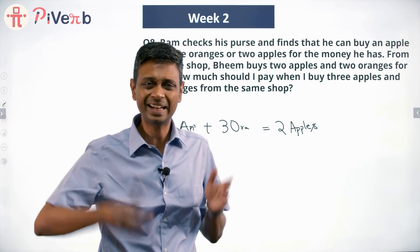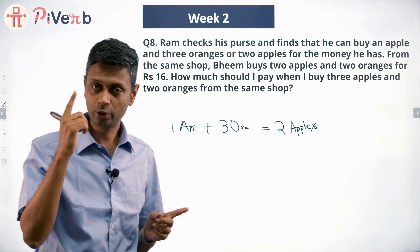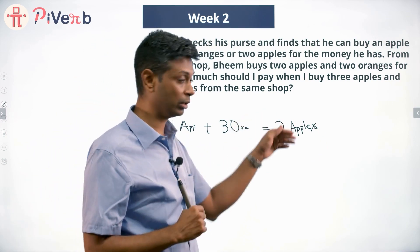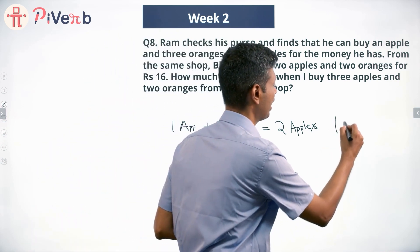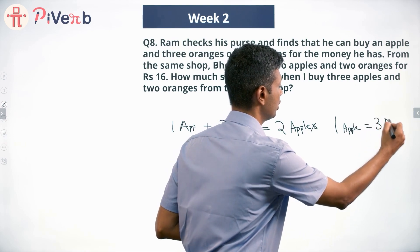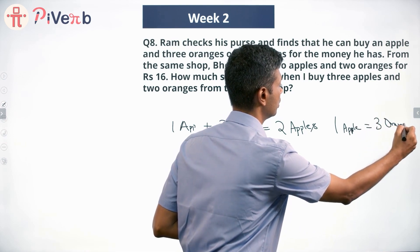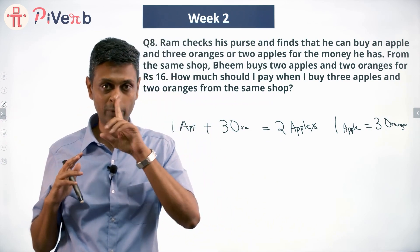Two apples, straight away. Something is popping out of this - from here, if he has money to buy one apple, he can either buy the second apple or he can buy three oranges. Or, the cost of one apple is nothing but the cost of three oranges. Then one very simple equation: whatever it costs to buy one apple...